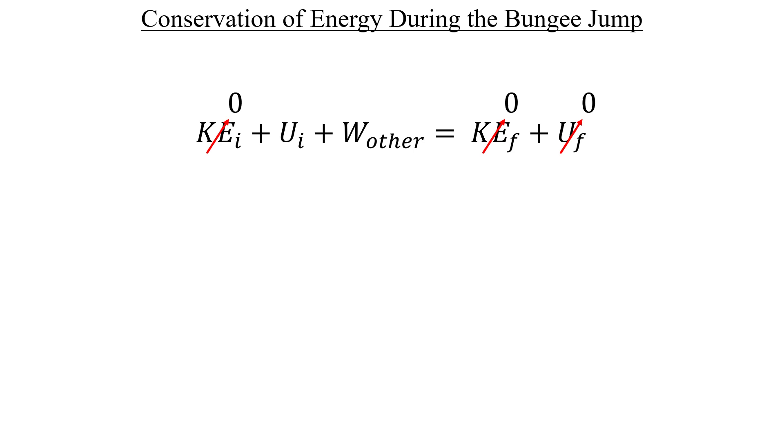This leaves us with the sum of the initial potential energy and some amount of work balancing each other out. But the question is, what work are we talking about here? Well, the goal is to solve for the spring constant k, which is always positive.